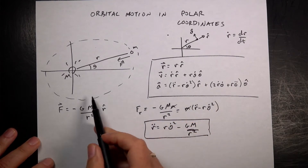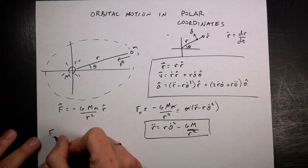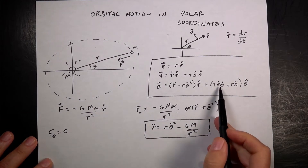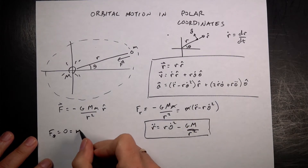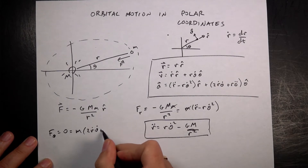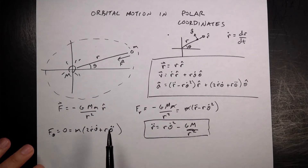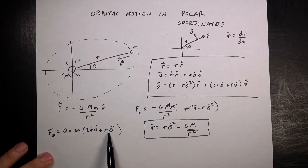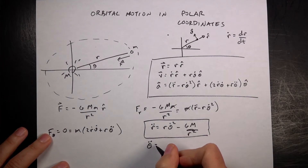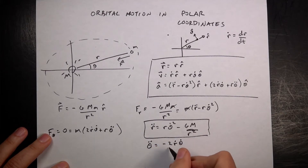For the theta-hat direction, the force is zero: 0 = m·(2·r-dot·theta-dot + r·theta-double-dot). Dividing by m and solving for theta-double-dot gives: theta-double-dot = −2·r-dot·theta-dot / r.